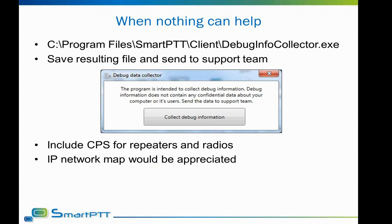Third, include a CPS file for your radios and repeaters. We commonly need a CPS file to make sure we properly diagnose the issue. Please name the CPS files correspondingly — Master Repeater, Peer Repeater, Handheld Radio, Control Station are examples of good names. Also provide passwords if your CPS files are password protected. Fourth, if you think your issue may be network related, please provide a network map. List all IP addresses used in your network and note which IP corresponds to which device — this will help us greatly to find and fix the issue.